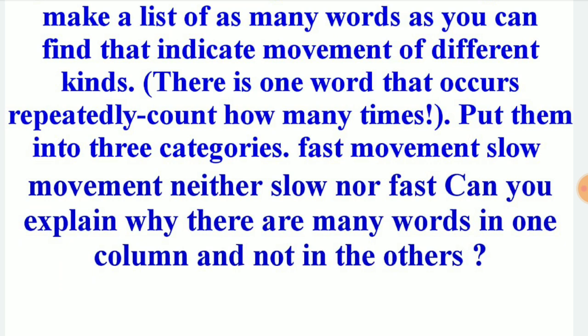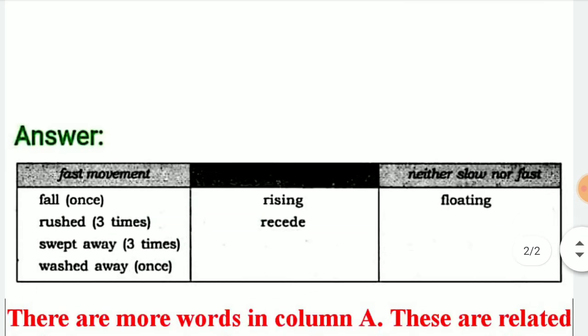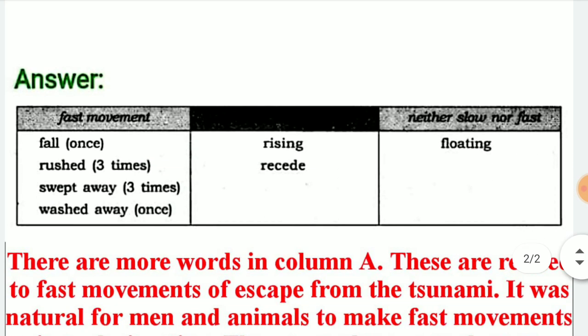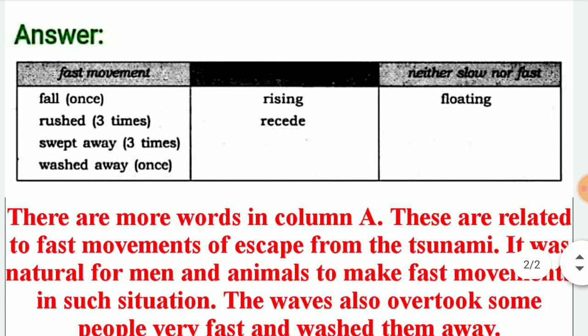Let's see the answer. Looking at the first category, the fast movement words are: fall, rush, swept away, and washed away — all these are fast movements. For neither slow nor fast, we have: rising and floating. There are not many words in the slow movement column.